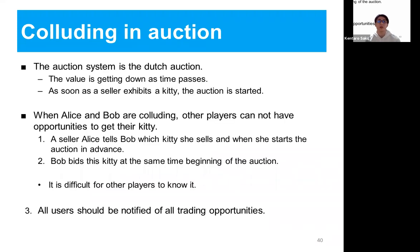Finally, we found that when two players are colluding, other players don't have opportunities to gain profit. For example, Alice tells Bob which kitty will be sold and when she lists it, so he can bid for her kitty as soon as the auction begins. Because of the Dutch auction system, bidding immediately means winning the auction. If they are colluding, other players won't be aware of the trade. So CryptoKitties doesn't meet condition 3.